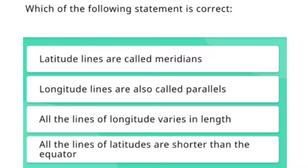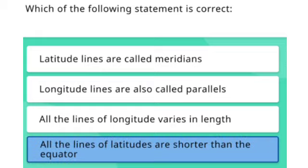The first question is: which of the following statements is correct? Option 1: Latitude lines are called meridians. Option 2: Longitude lines are also called parallels. Option 3: All the lines of longitude vary in length. Option 4: All the lines of latitudes are shorter than the equator. The right answer is Option 4 — all the lines of latitude are shorter than the equator.